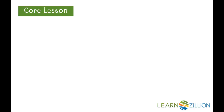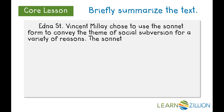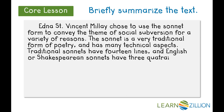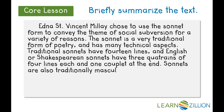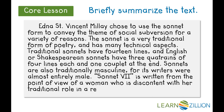Now we need to briefly summarize the text and the sonnet form. Edna St. Vincent Millay chose to use the sonnet form to convey the theme of social subversion for a variety of reasons. The sonnet is a very traditional form of poetry and has many technical aspects. Traditional sonnets have 14 lines, and English or Shakespearean sonnets have three quatrains of four lines each and one couplet at the end. Sonnets are also traditionally masculine, for their writers were almost entirely male. Sonnet 7 is written from the point of view of a woman who is discontent with her traditional role in a relationship.